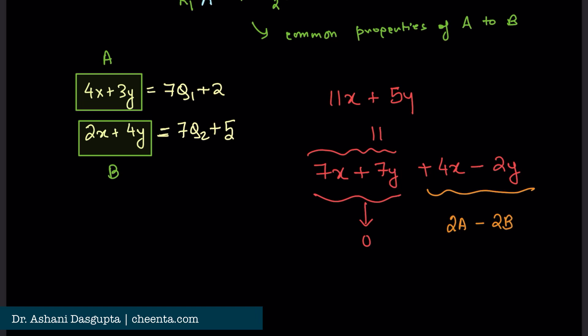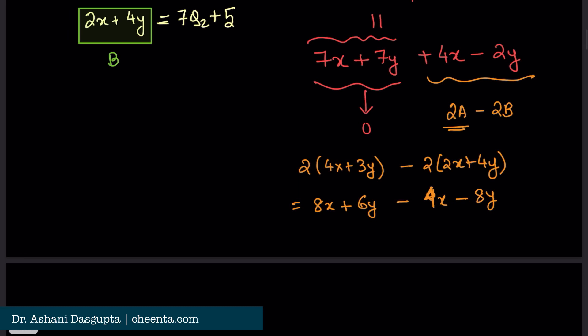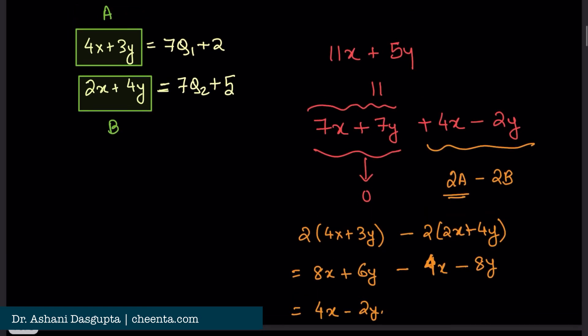I mean, you can check. What is 2a? 2a is 2 times 4x plus 3y minus 2 times 2x plus 4y. This is 8x plus 6y minus 4x minus 8y. Which is precisely what we wanted. This is 4x minus 2y. So, this thing is 2a minus 2b as I just mentioned.